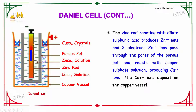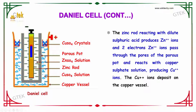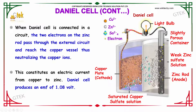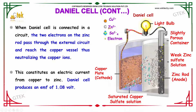The zinc rod reacting with the dilute sulfuric acid produces Zn²⁺ ions and two electrons. The Zn²⁺ ions pass through the pores of the porous part and react with the copper sulfate, producing Cu²⁺ ions. The Cu²⁺ ions deposit in the copper vessel. When the Daniel cell is connected in a circuit, the two electrons from the zinc pass through the external circuit and reach the copper vessel, thus neutralizing the copper ions.